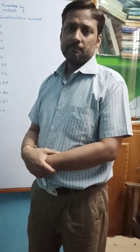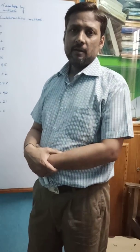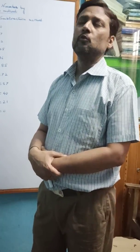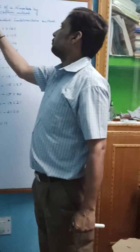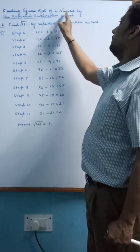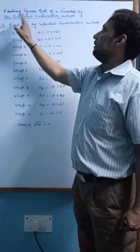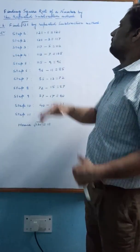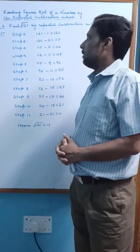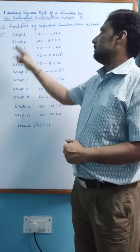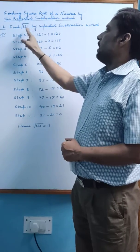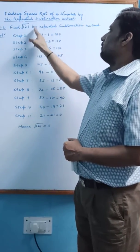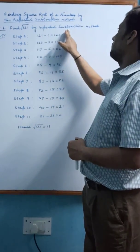Good morning. Today I will discuss how to find a square root of a number by the repeated subtraction method. We will take one example. Find the square root of 121 by repeated subtraction method.